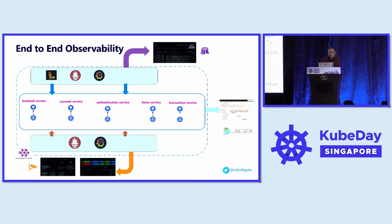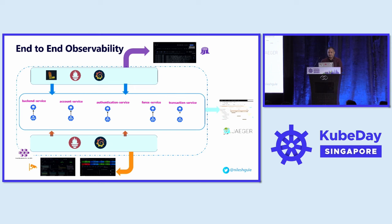In terms of end-to-end observability in this demo: we have five different microservices, we use Loki for log aggregation and Grafana for visualizing those logs, we use Prometheus and Grafana together for metrics, and Jaeger for distributed traces. All of this is integrated using OpenTelemetry, which acts as a standard and doesn't tie into any specific tools. So if we want to switch from one backend to a different backend, it's possible — OpenTelemetry allows that and it can be done easily using configuration changes.